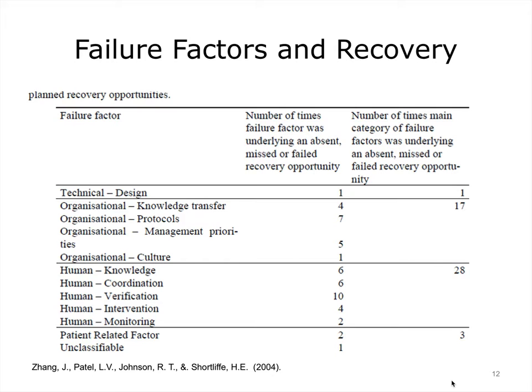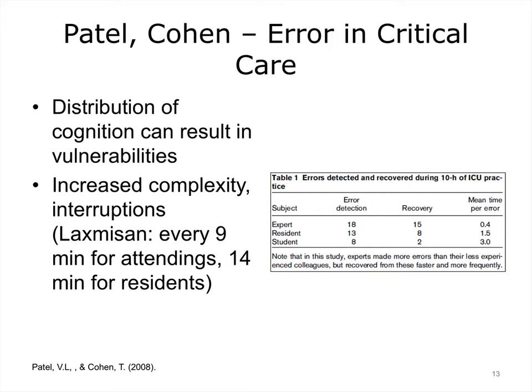This table shows failure factors under the headings of technical, design, and organizational culture, with the number of times these factors were underlying a missed, absent, or failed recovery opportunity. Distribution of cognition, which takes place not only in individual humans but across the entire system of tools, information, and people, can result in vulnerabilities that can lead to errors.